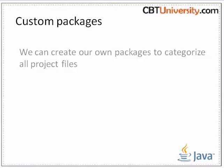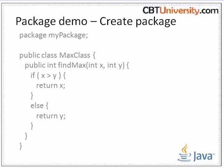We can create our own packages to categorize all project files. These are used to define functionality for a specific project purpose. We can import the entire package or specific classes as per requirement, and these packages can be distributed as required. To create a package, first create a folder directory with the same name as the package, save all related files in it, then compile the source files and the class files are ready to be imported.